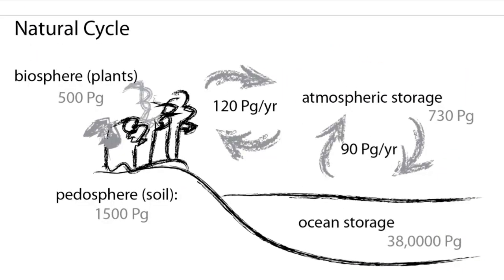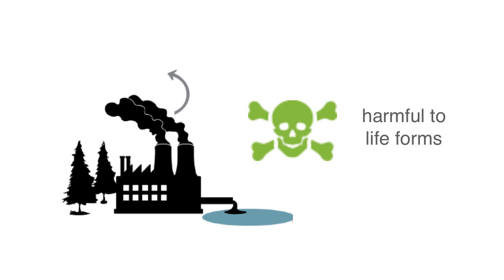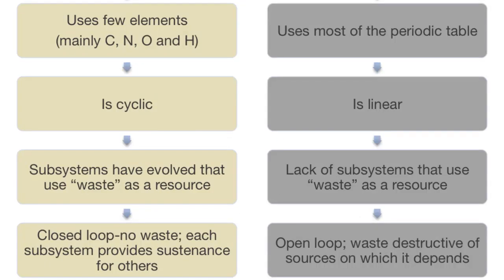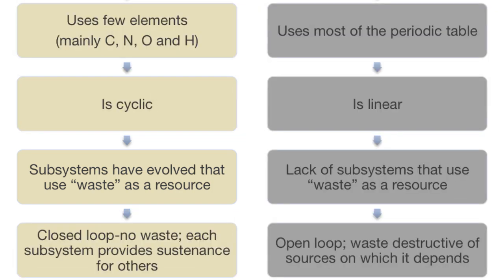In natural systems, subsystems have evolved that use the waste from one part of the process as food. In the simple example of the carbon cycle, humans exhale carbon dioxide, which is food for plants. Plants exhale oxygen, which is food for animals. Industrial systems, on the whole, lack subsystems that use the waste streams. So natural systems have closed-loop processes — each subsystem provides sustenance for the other.